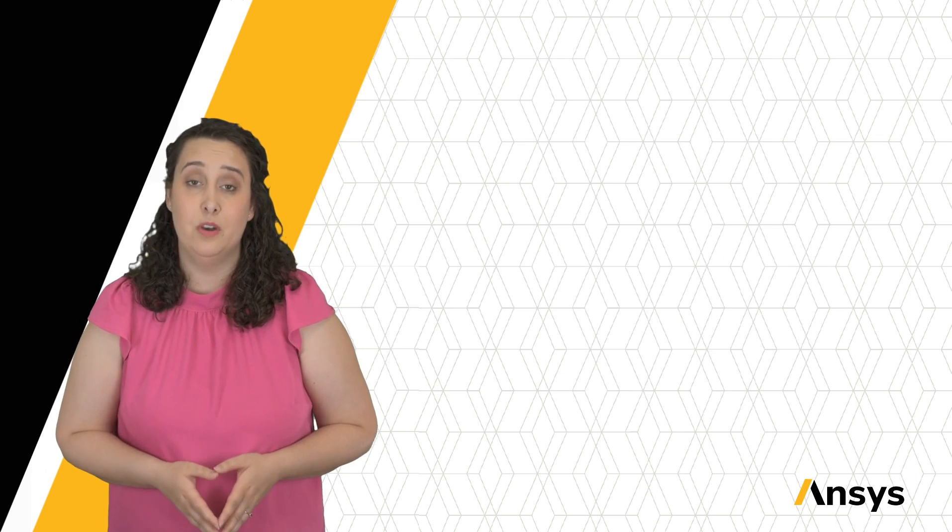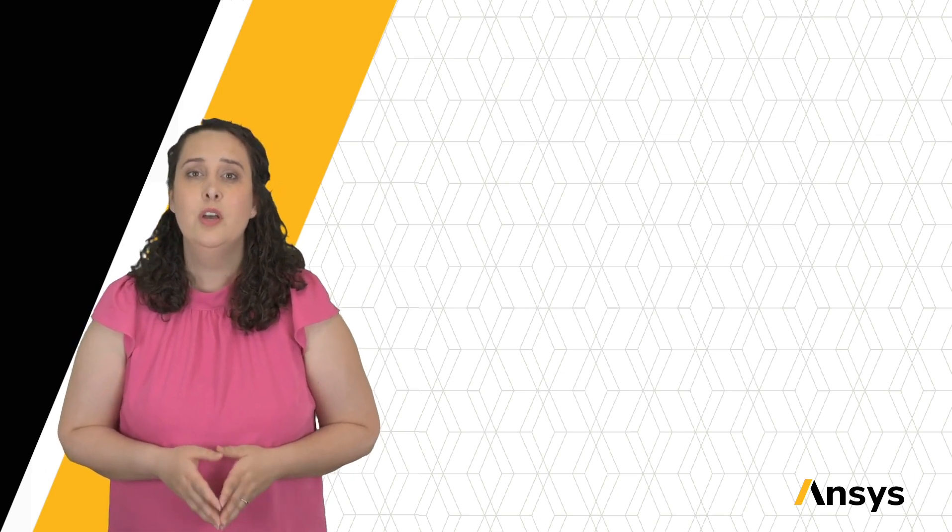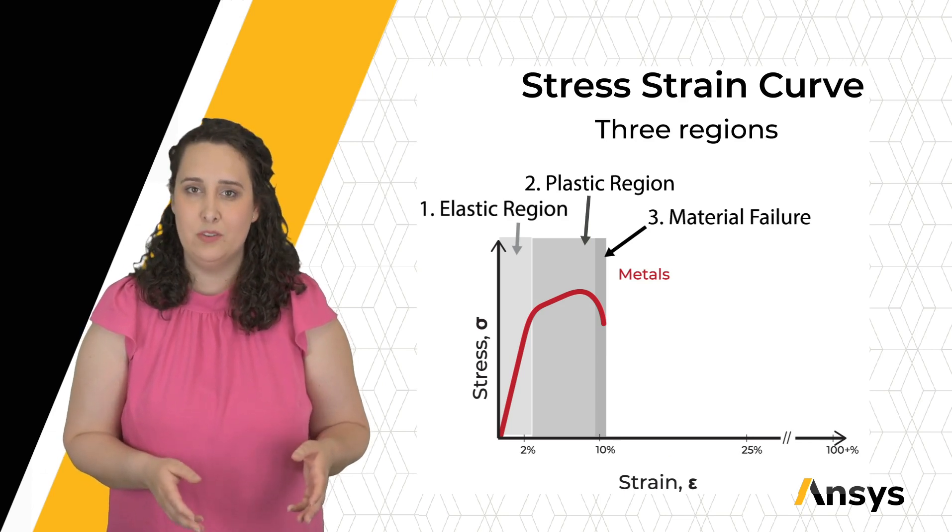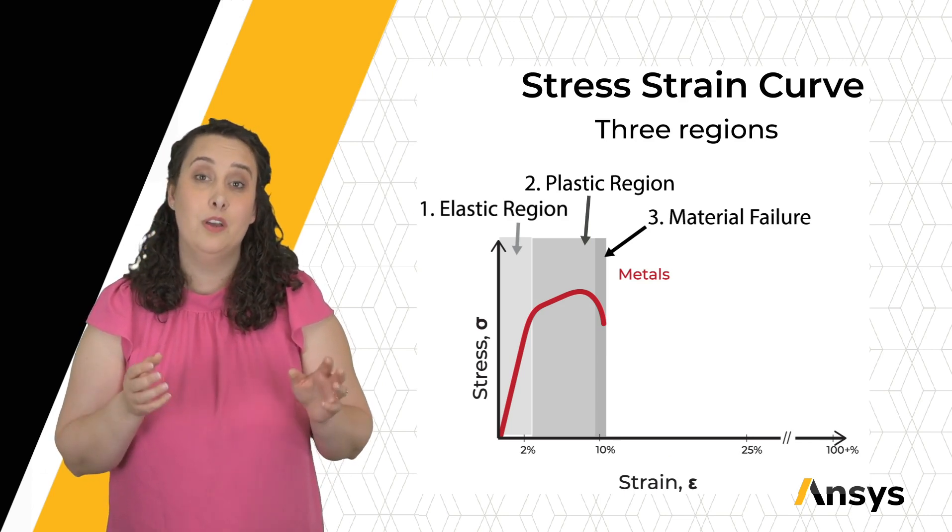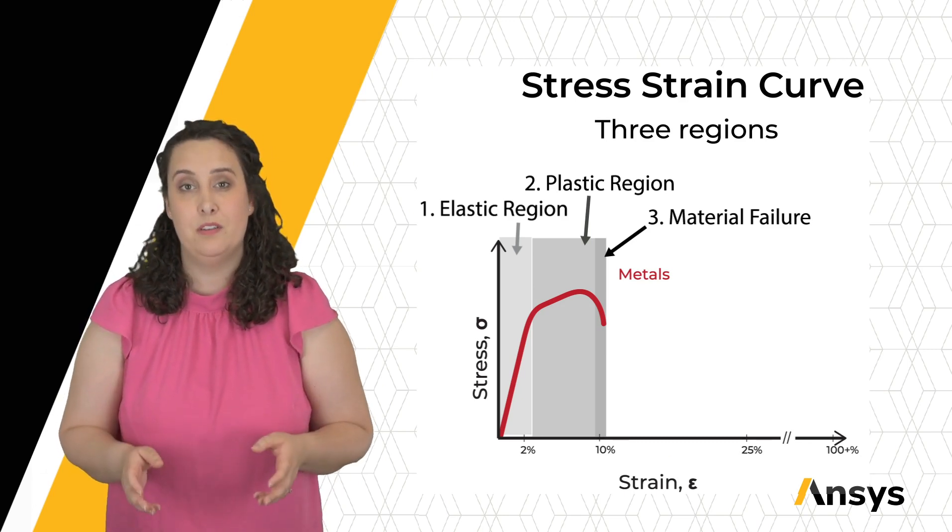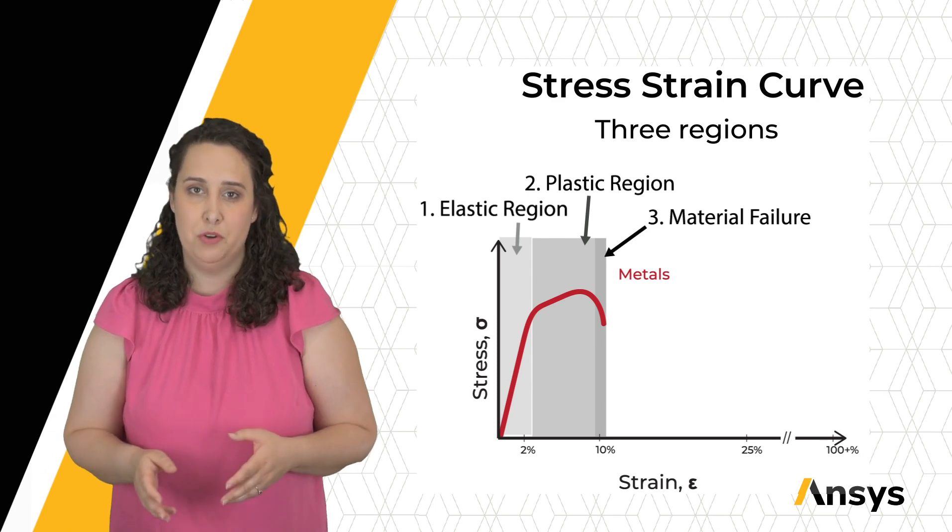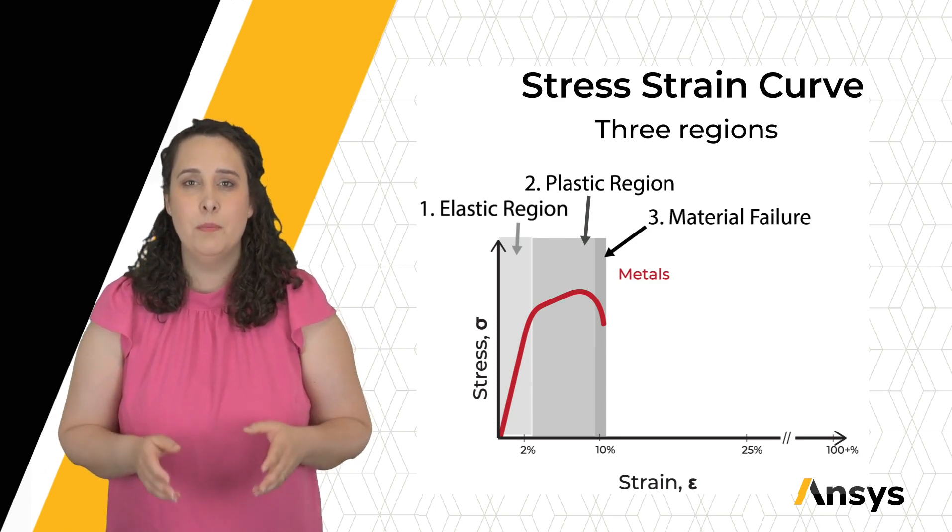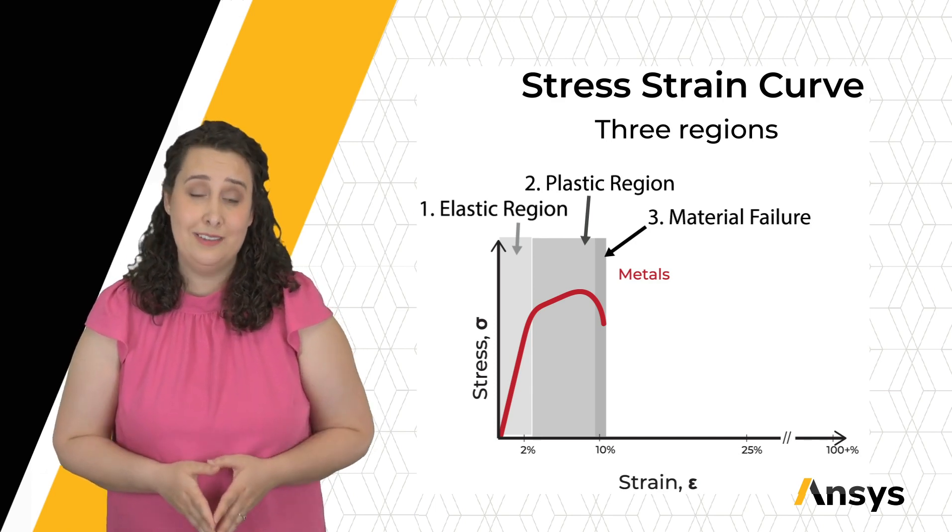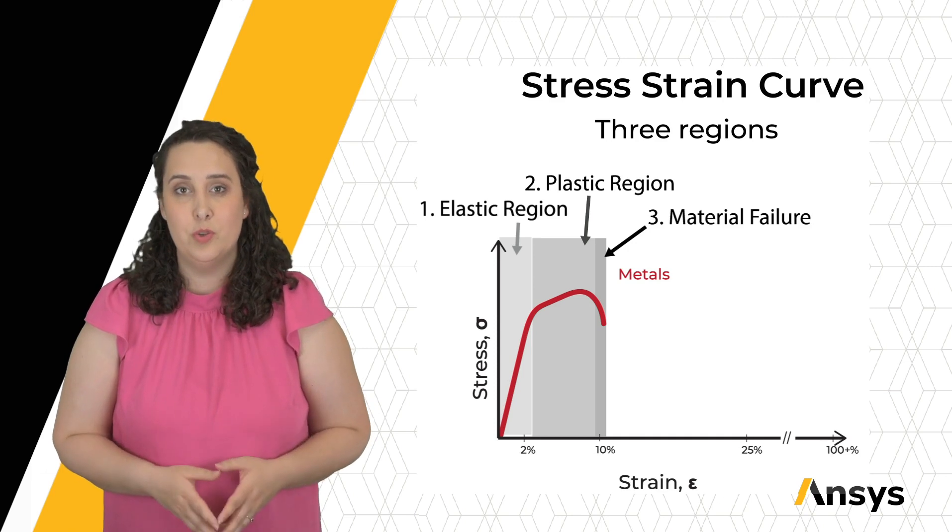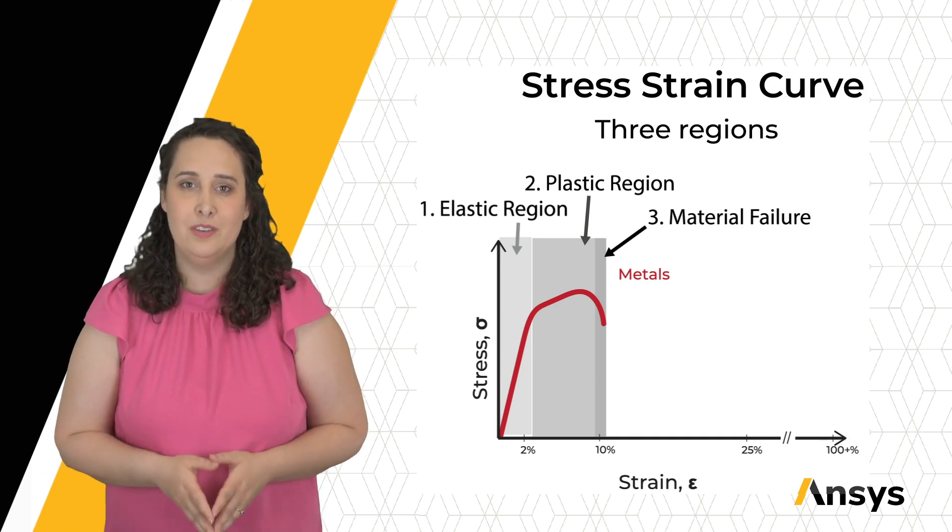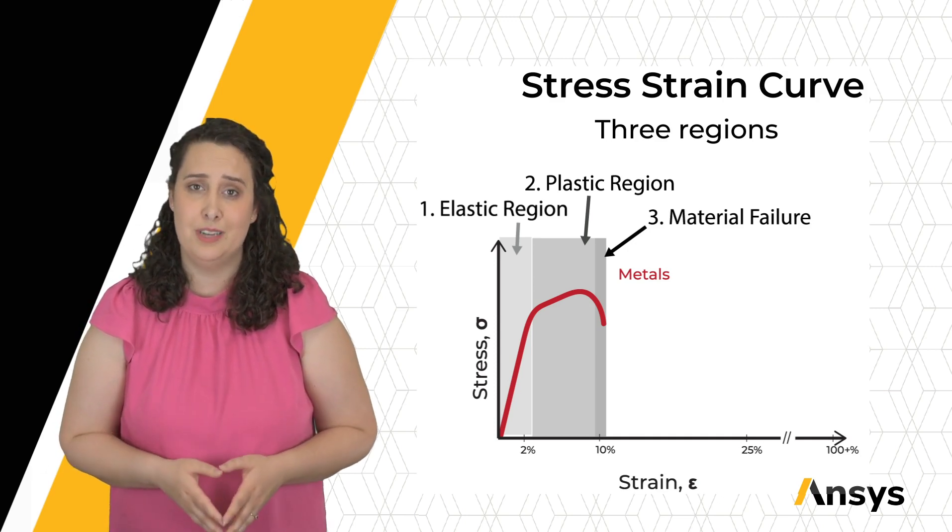We can plot our stress strain values on a stress strain curve. This curve has three major regions: the elastic region, which is the focus of today's course, where I have non-permanent deformation occurring; the plastic region, where I have permanent deformation occurring; and material failure. Remember that when I'm looking at stress strain curves, I'm talking about a tensile sample. While other stress strain curves do exist, and many might look quite similar, the most commonly used example is a material that's being pulled in tension.